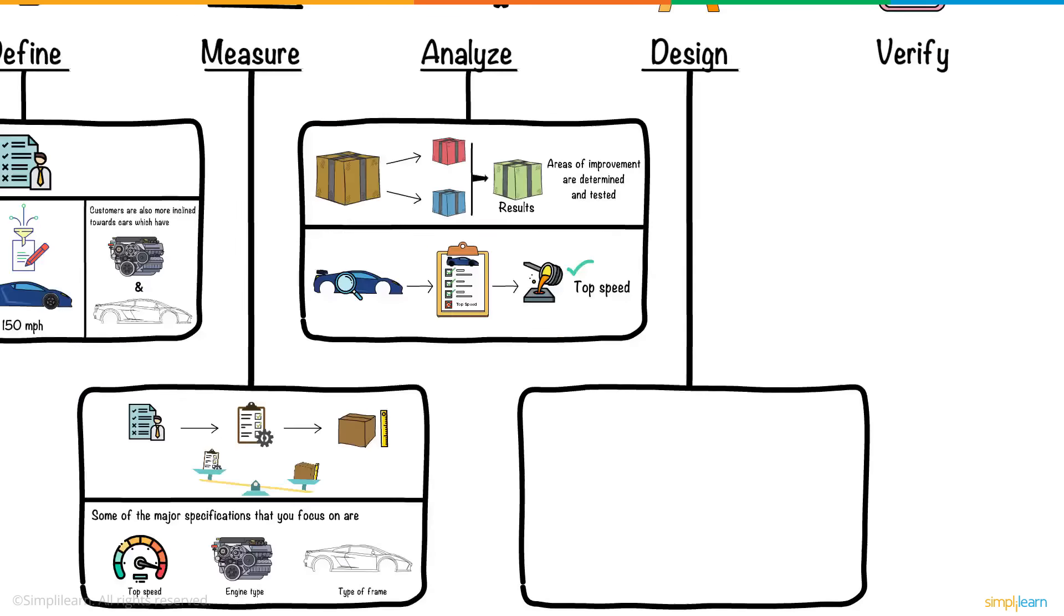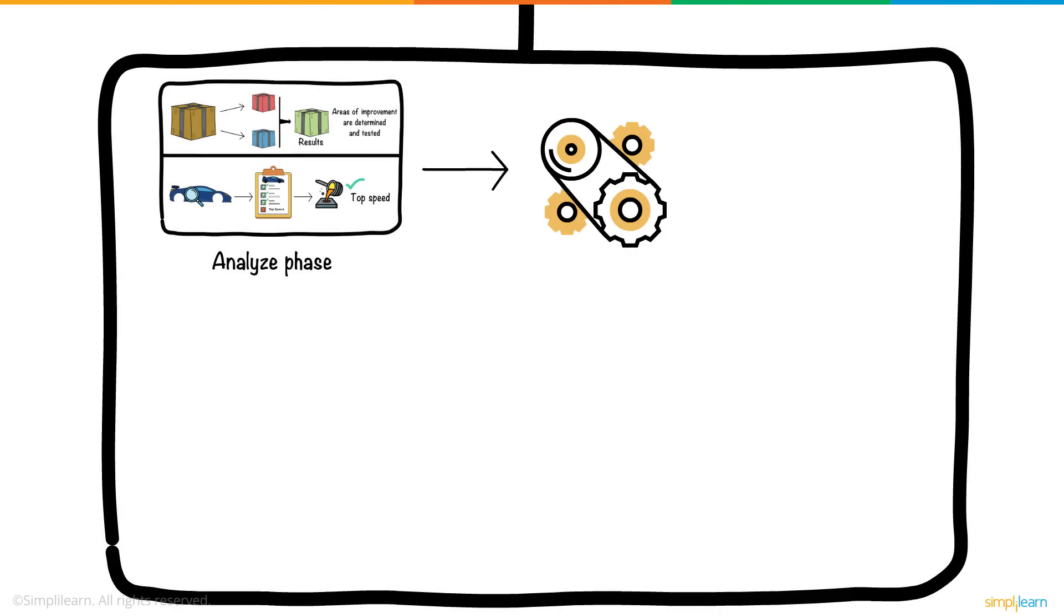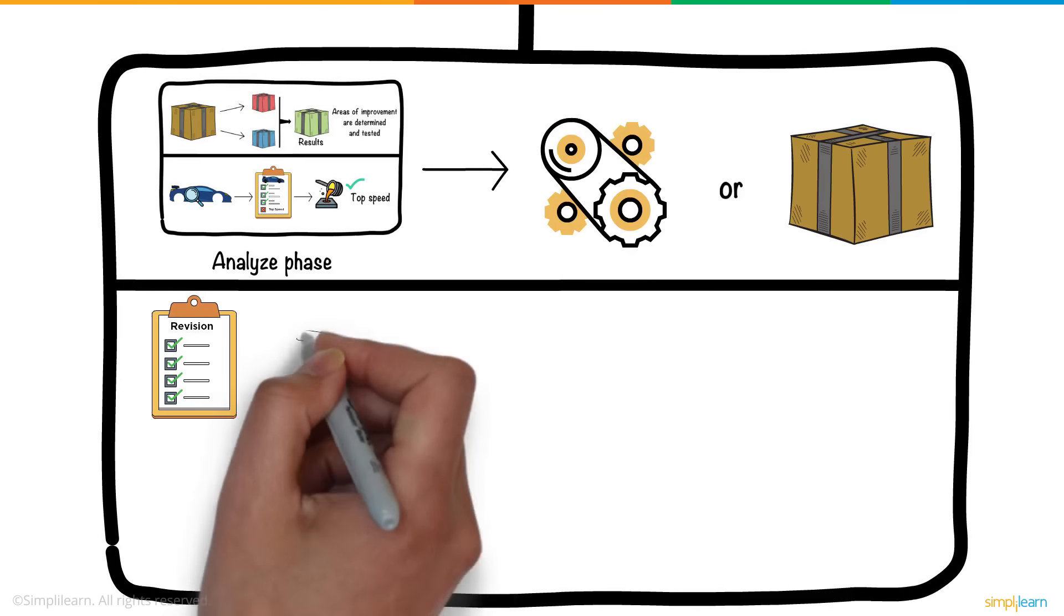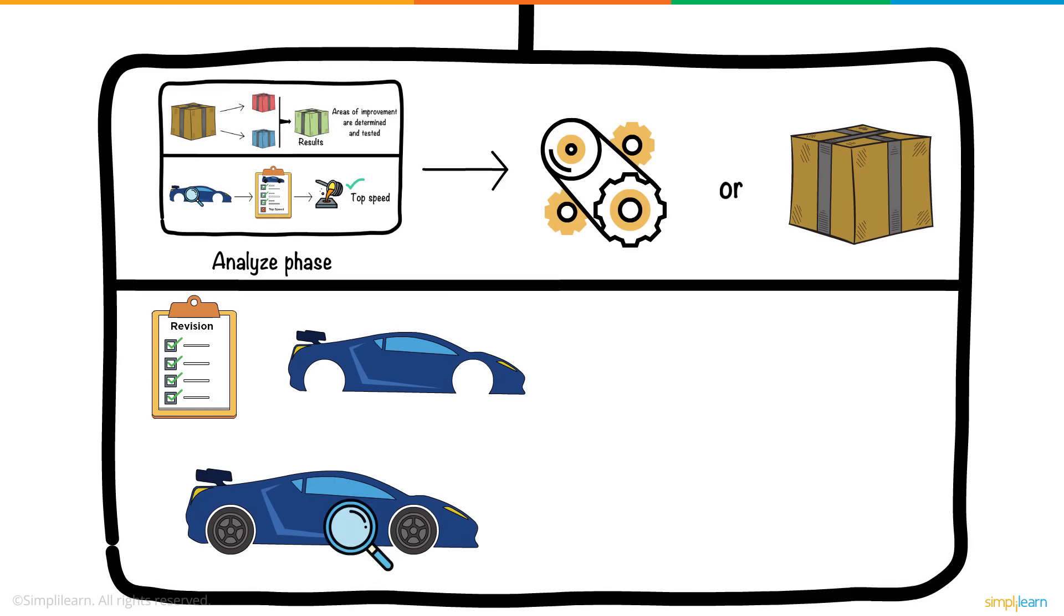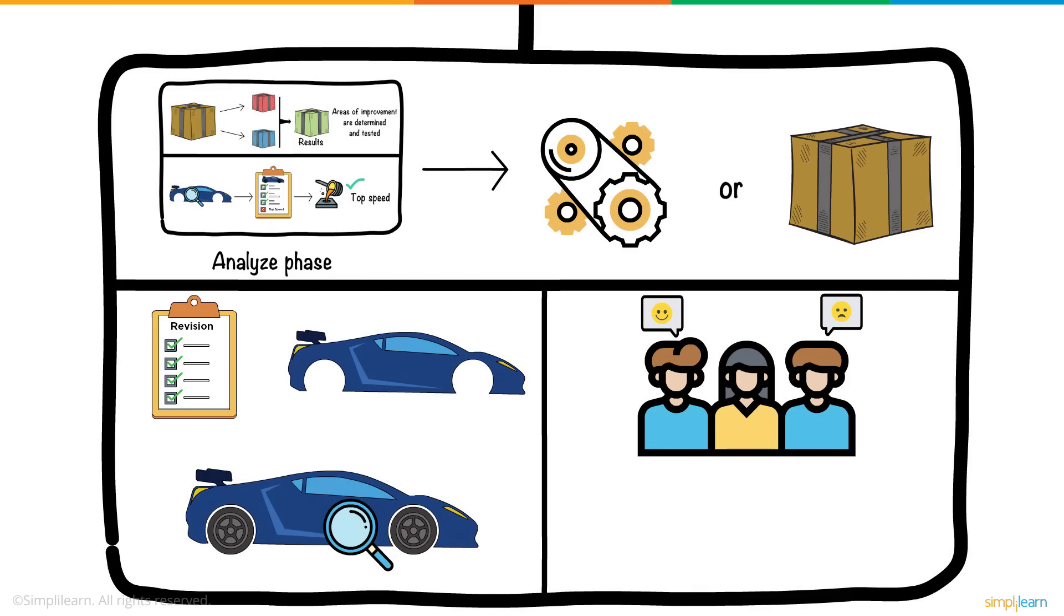Following this, the Design phase. Based on the learnings from the Analysis phase, the new process or product is designed. Revisions are made to the model, and the car is manufactured with the new material. The Analysis phase is repeated based on the new design. You also bring a focus group and see how they receive it. Based on their feedback, further changes are made.